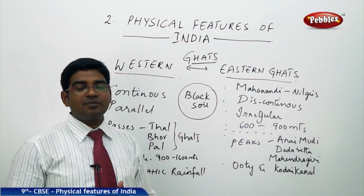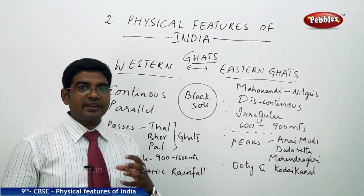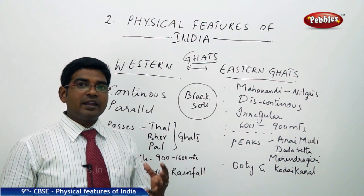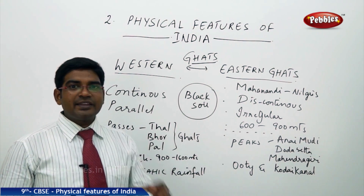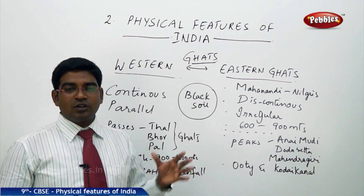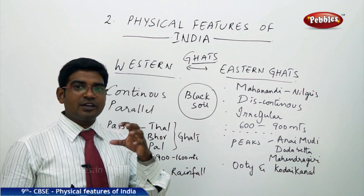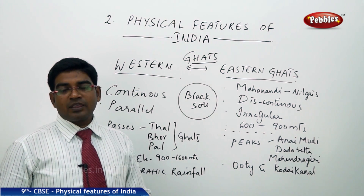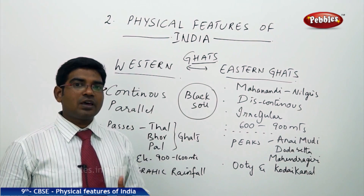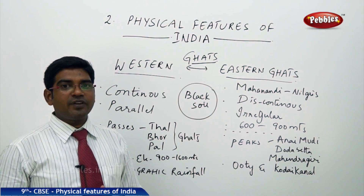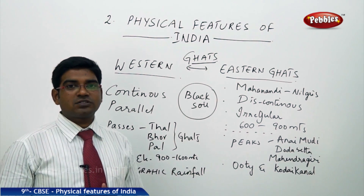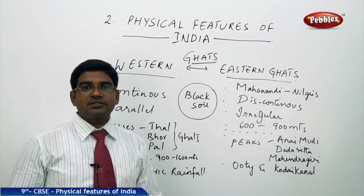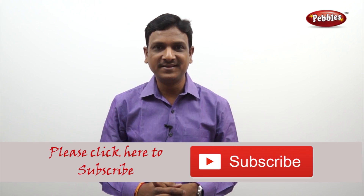Most of the Deccan Plateau is a trap created by volcanic eruption activity. It has been heavily eroded over time and is now largely filled with black soil. Almost all the rocks here are igneous or metamorphic rocks. That is how we have summarized the Western and Eastern Ghats.